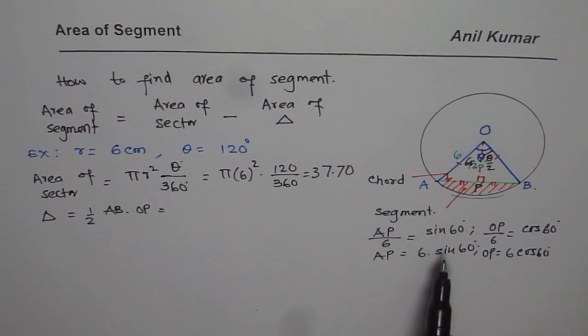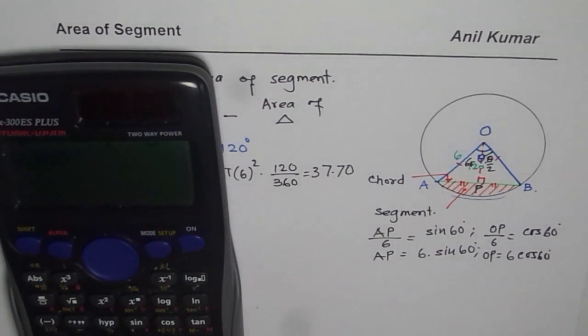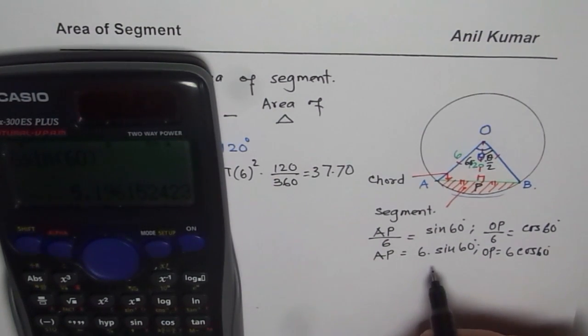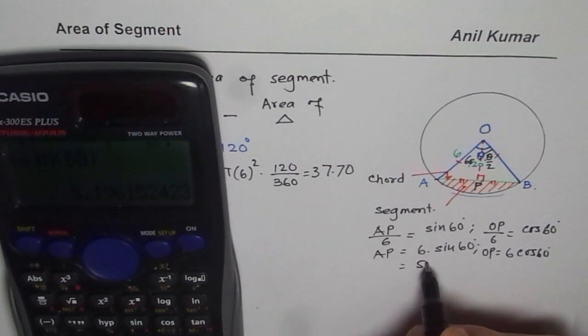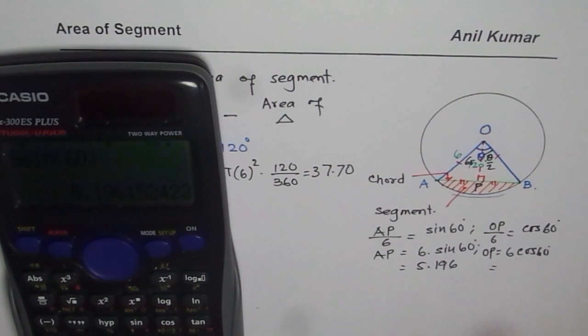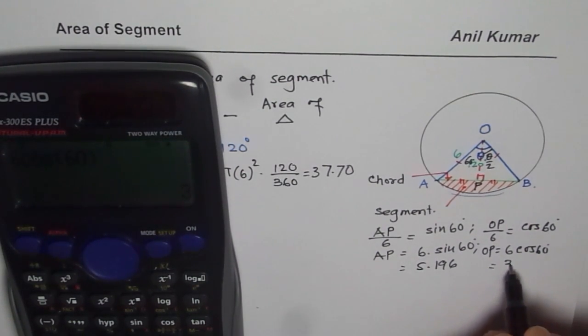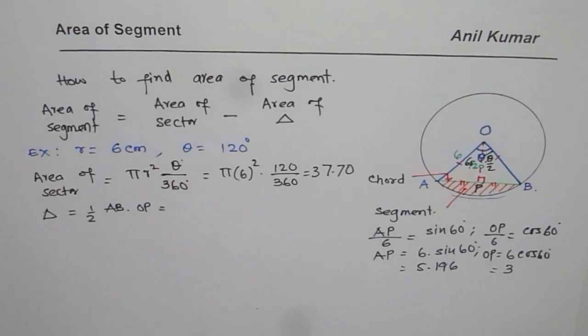So likewise, we can get both the sides. So let's solve this. 6 times sine of, we can use special triangles also to find this answer. So 3 square root 3, or let's convert to decimals. It is 5.196. As far as OP is concerned, it is 6 times cos of 60 degrees, which is going to be half of this. So that is 3.